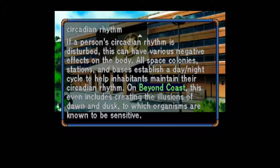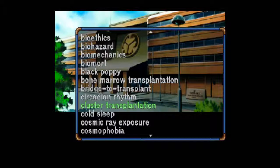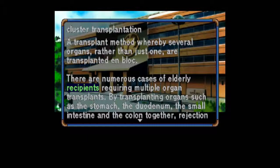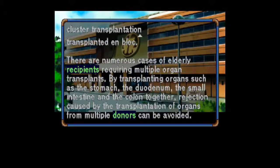I'm running out of drink. Cluster Transplantation: A transplant method whereby several organs rather than just one are transplanted en bloc. There are numerous cases of elderly recipients requiring multiple organ transplants. By transplanting organs such as the stomach, the duodenum, the small intestine, and the colon together, rejection caused by the transplantation of organs from multiple donors can be avoided.